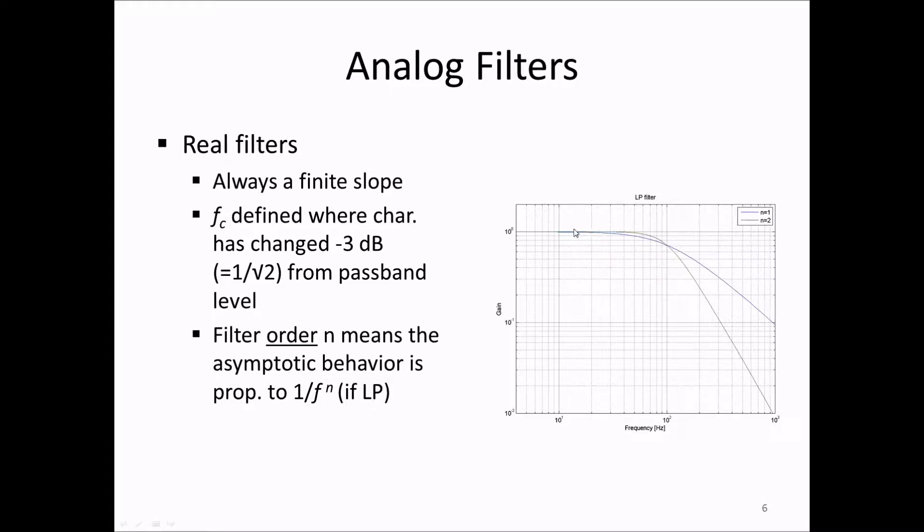Here you see a low pass filter of order one in blue and two in green. And you see that the slope is twice as steep when the order is two instead of one.